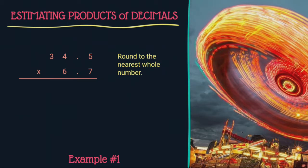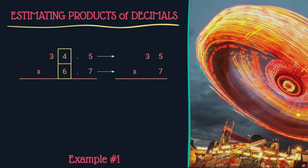Let us estimate or round both numbers to the side and then we'll multiply them. We're going to round to the nearest whole number, and we know that to be the ones place. So 3.45 will round to 35, 6.7 will round to 7, and then we just need to multiply. We should get a whole number as our answer.